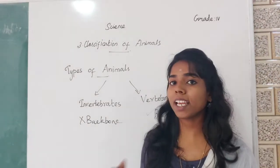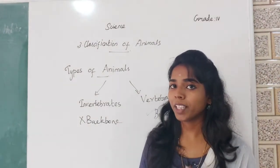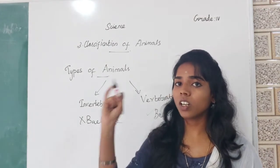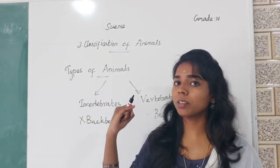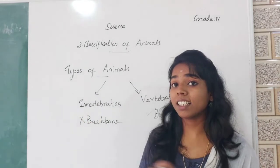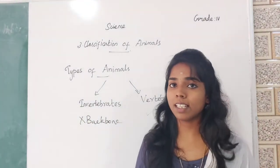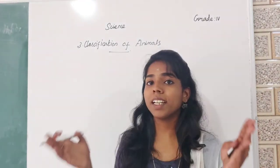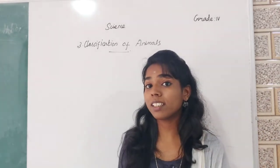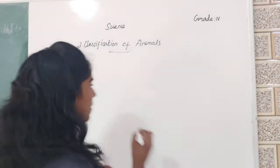Now students, can you say an example for invertebrates? Insects like cockroach, ant, snail, slug — they are all examples of invertebrates. Then in addition to invertebrates, we learnt about the body division of insects.